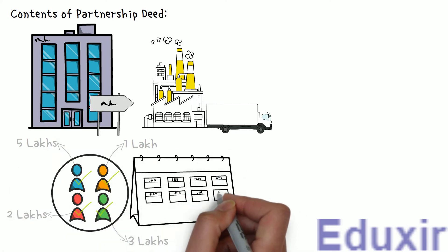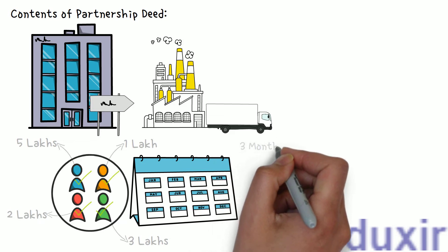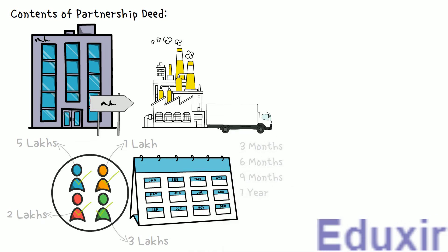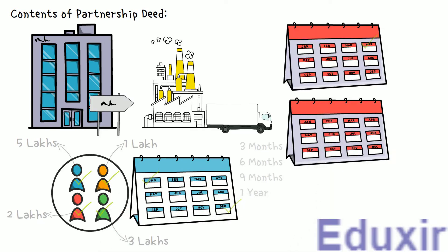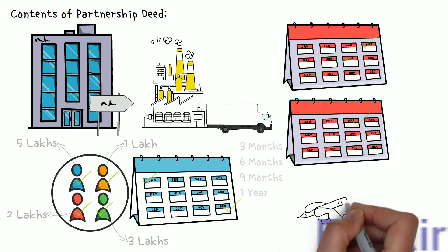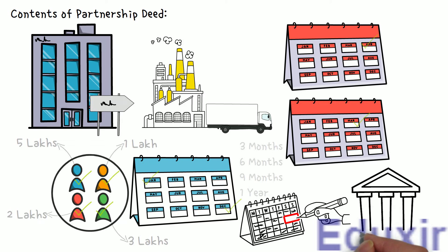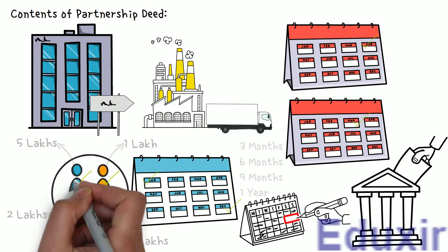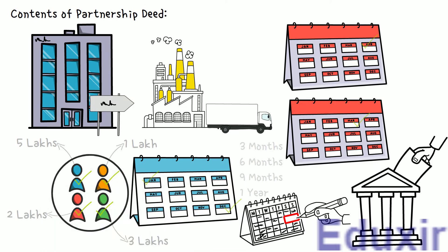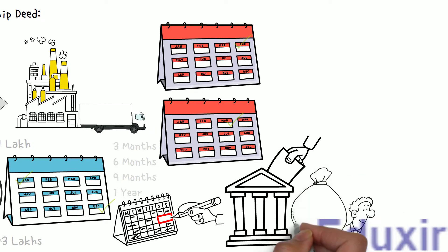The next thing is the accounting period of the firm — whether it is 3 months, 6 months, 9 months, or 1 year. For instance, if it is 1 year, they should also specify whether it is from January 1st to December 31st, or from April 1st to March 31st. The next thing is the date on which the partnership is committed. The next thing is rules regarding the operation of bank accounts — for example, if the amount to be spent is more than 50,000 rupees, it requires approval from all the partners. The next thing is the profit and loss sharing ratio, specified as a ratio for each partner.